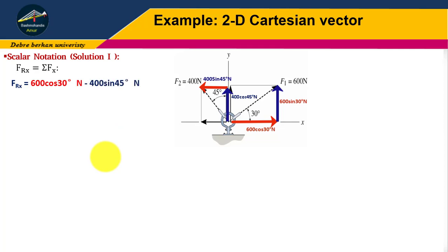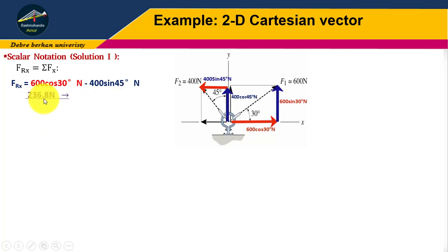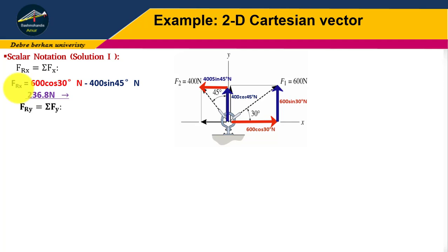The resultant force in the x direction equals the summation of Fx, which gives 236.8 Newtons to the right direction. Next, FRy equals the summation of Fy. Therefore, FRy equals 600 sin 30 degrees plus 400 cos 45 degrees.